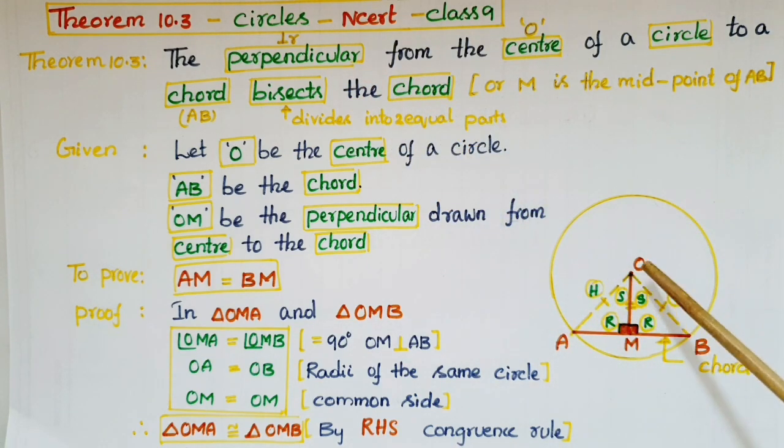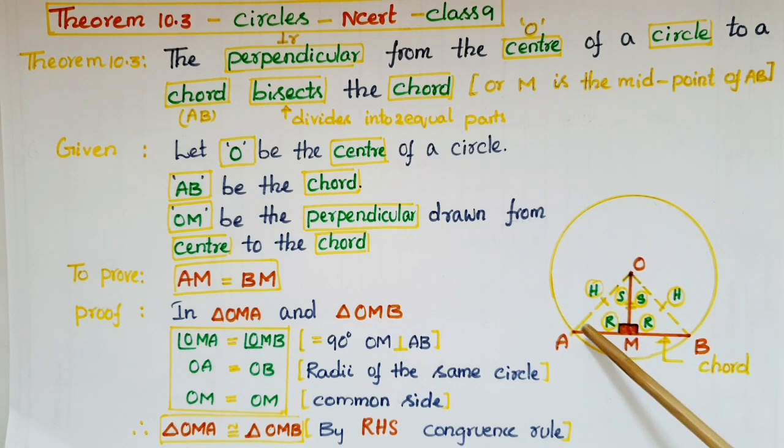Let O be the center of the circle and AB be the chord. We know that a chord is a line segment joining any two points on the circle. And if you draw a perpendicular line from the center to the chord, so here OM is the perpendicular line to the chord.